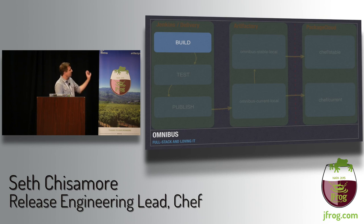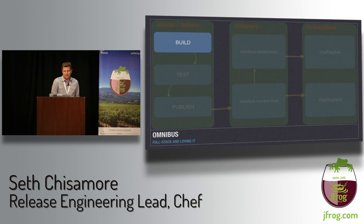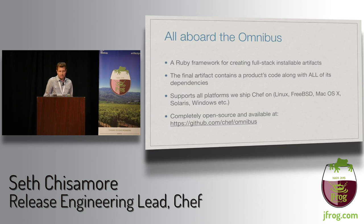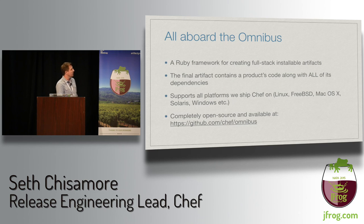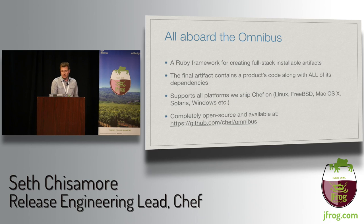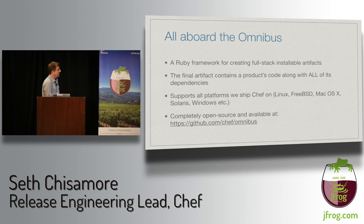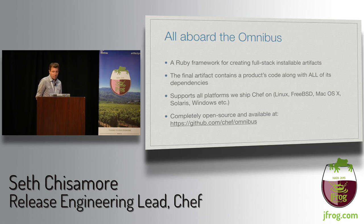Now we're going to zoom in on the build stage. I know this doesn't have a whole lot to do with Artifactory, but there are important pieces at artifact creation that affect later stages. We use something called Omnibus for doing our builds — it's a Ruby framework for creating full-stack installable artifacts. The final artifact contains the project code, all dependencies, and it supports all platforms we ship Chef on: Linux, Solaris, Windows, everything. It's completely open source.